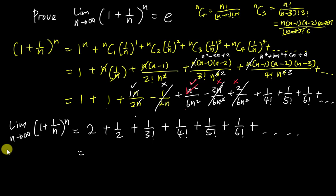Adding these terms: 1 + 1 + 1/2! + 1/3! + 1/4! + 1/5! + 1/6!. The calculator gives approximately 2.7181, which is very close to e.